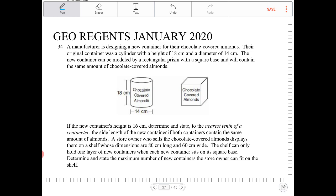If the new container's height is 16 centimeters, determine and state to the nearest tenth of a centimeter the side length of the new container. If both containers contain the same amount of almonds,